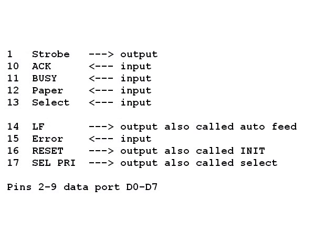Here is a closer look at the pin designations and just what they do. Pin 1 is an output called strobe, as is pin 14 which is line feed. Pin 16 is reset, or init depending on whose spec sheet you are reading. Pin 17 is select printer or select. These are all 5 volt TTL level outputs. In addition we have 5 inputs: pins 10, 11, 12, 13, and 15. Pins 2 through 9 comprise an 8-bit data port with designations D0 through D7 respectively.